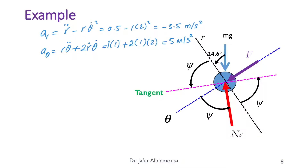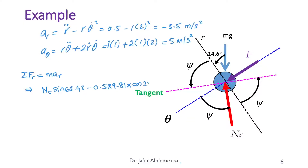We now sum the forces along the radial direction: ΣF_r = m·a_r. This gives N_C·sin(63.43°) − 0.5·(9.81)·cos(24.6°) = 0.5·(−3.5). Solving this equation, we get N_C = 3.03 Newtons.